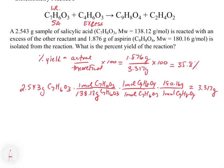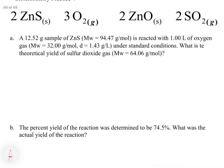Putting it together: 1.876 divided by 3.317 times 100 gives a yield of 35.8%. The key thing is distinguishing actual yield from theoretical yield. The phrase 'isolated from the reaction' indicates an experimental, actual value, whereas the theoretical yield is something you calculate. That distinction will help you in these problems.